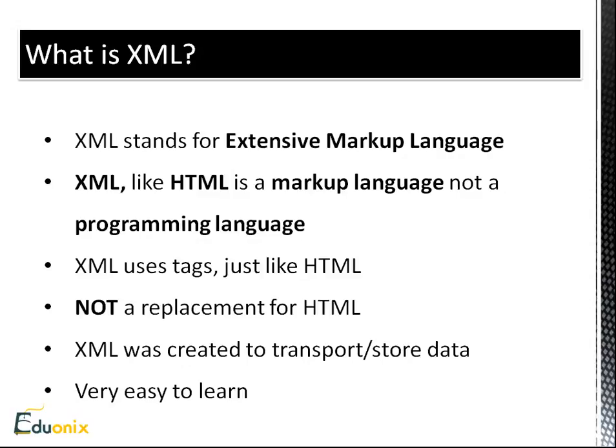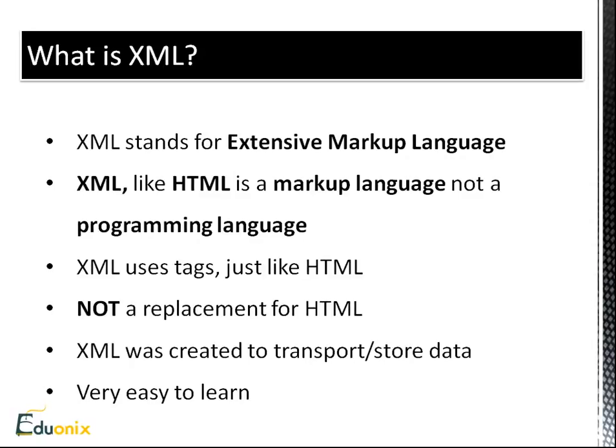XML uses a tag syntax just like HTML, but the difference is with XML you make your own tags — there are no pre-made tags in XML. For example, if you have a list of movies you can have a movies tag with a genre tag. You just make up your own tags as you go. You can also have attributes like you can in HTML. XML is also fairly easy to learn compared to learning an entire programming language.